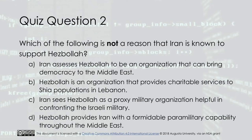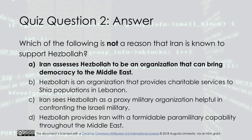Quiz question two: Which of the following is not a reason that Iran is known to support Hezbollah? A) Iran assesses Hezbollah to be an organization that can bring democracy to the Middle East. B) Hezbollah is an organization that provides charitable services to Shia populations in Lebanon. C) Iran sees Hezbollah as a proxy military organization helpful in confronting the Israeli military. D) Hezbollah provides Iran with a formidable paramilitary capability throughout the Middle East. The answer is A.